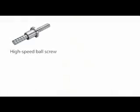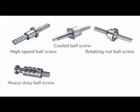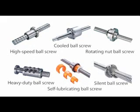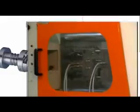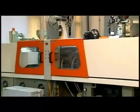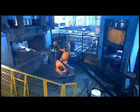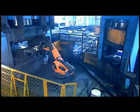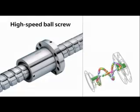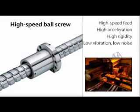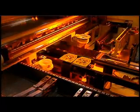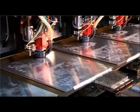Ball screws have undergone many improvements and innovations since they were first commercialized, and today many different types have been developed. Heavy duty ball screws must withstand high axial loads and are used in all-electric injection machines, stamping machines, semiconductor manufacturing equipment, and forging machines. High speed ball screws have high velocity and high acceleration; they must be highly rigid and have low noise and vibration, and are used in fast feeds for machine tools, high speed mold cutting center machines, and high speed general cutting center machines.